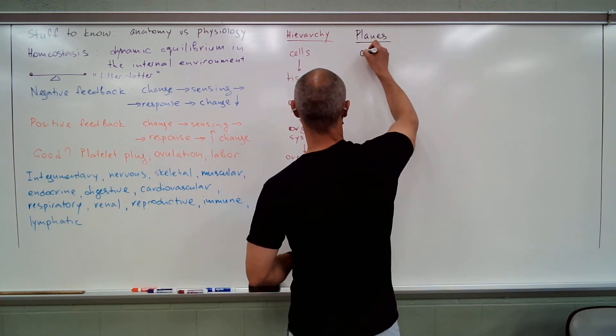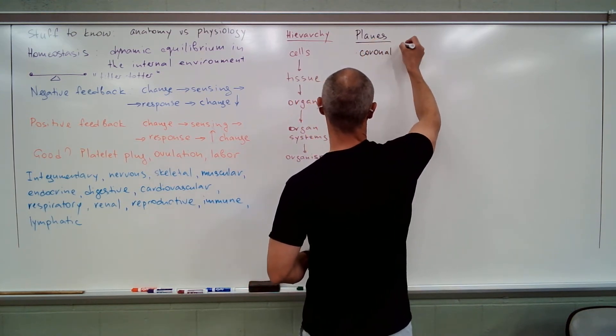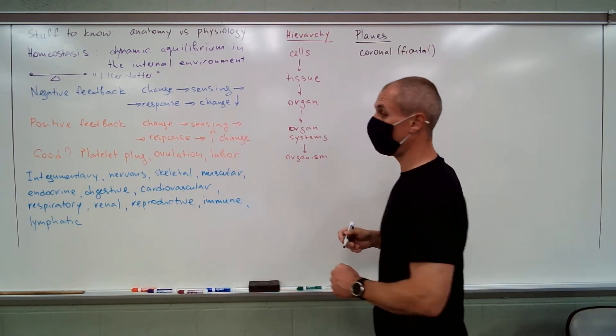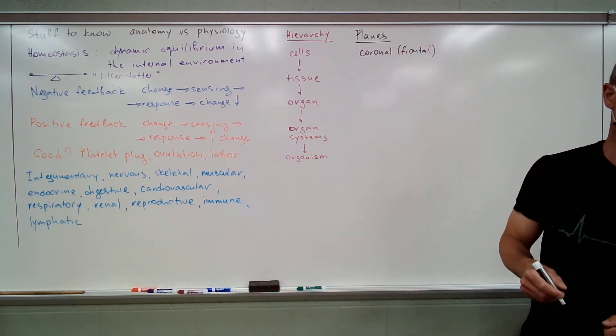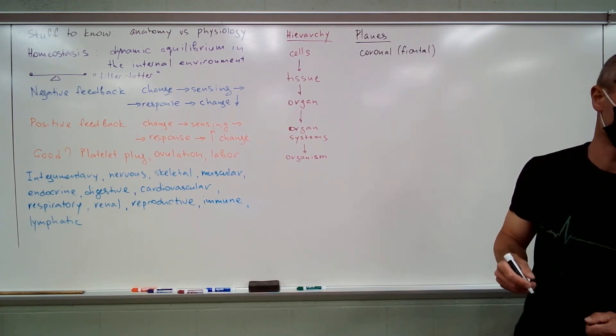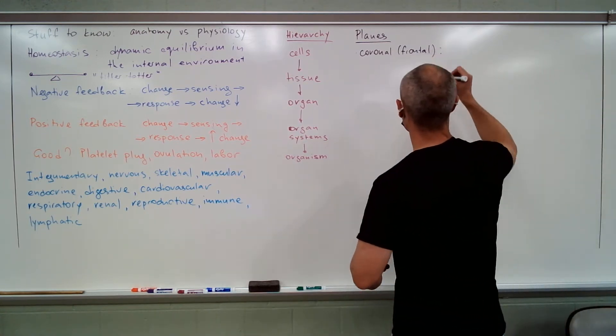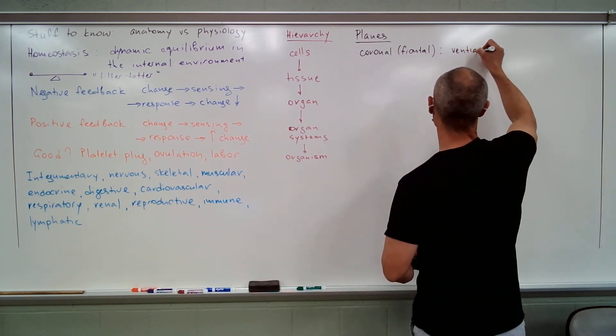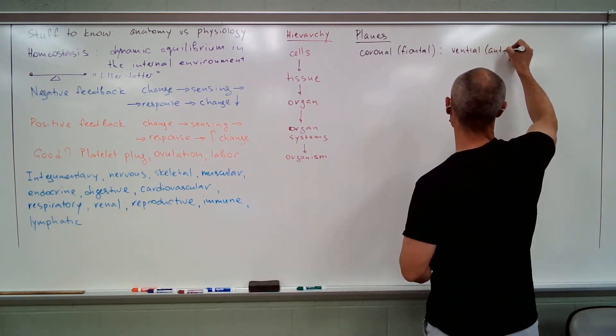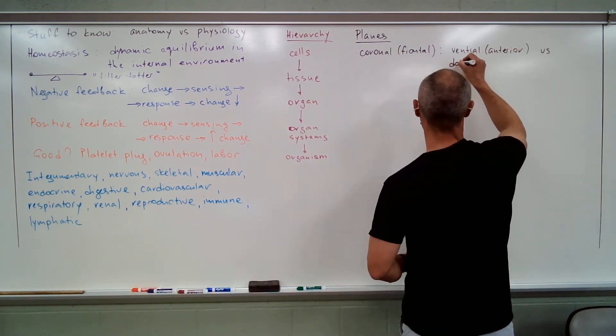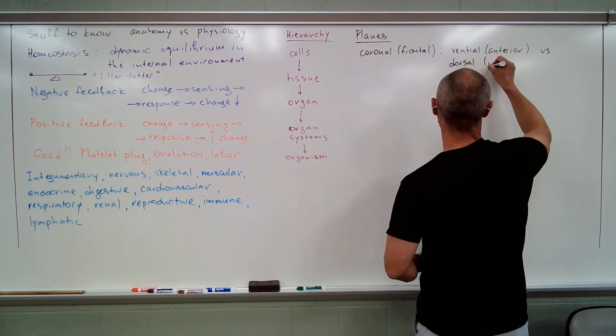Planes and associated terminology. First one is coronal plane or frontal plane. If you took net term before, it's going to sound an awful lot similar, practically the same. So terms that you need to know: ventral or anterior versus dorsal or posterior.